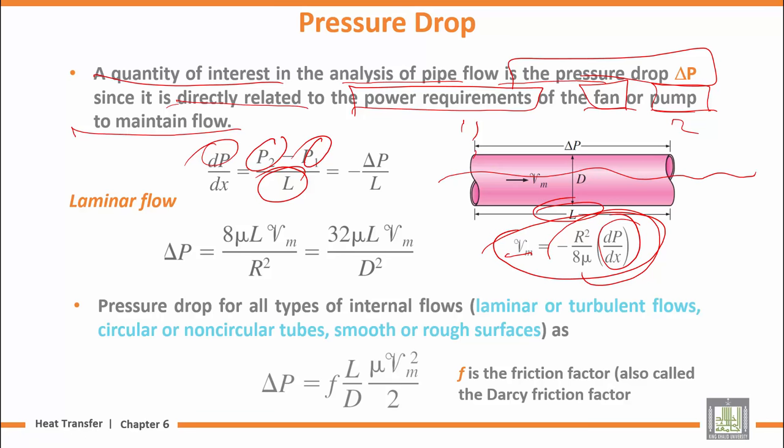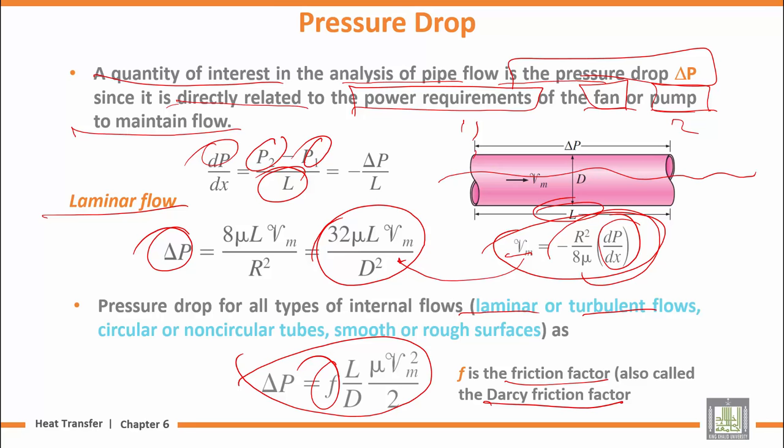For laminar flow, delta P is related to the friction factor, but there is a general relationship with the friction factor or Darcy friction factor. This applies to laminar and turbulent flow, circular and non-circular tubes, and rough and smooth surfaces.